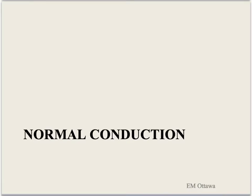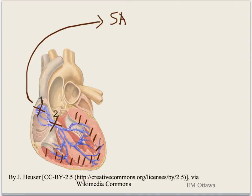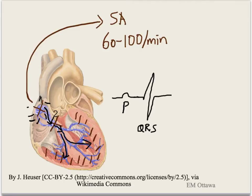First, normal heart conduction. There are three pacemakers in the heart: the SA node, the AV node, and the ventricles. The SA node is the normal pacemaker of the heart — it beats at 60 to 100 beats per minute. Impulses originate from the SA node, causing the atrium to depolarize — that is the P wave. It then travels to the AV node and down the His-Purkinje fibers, then splits into the left and right bundle branches, causing ventricular depolarization — that gives you the QRS complex. T waves represent repolarization of the ventricle.